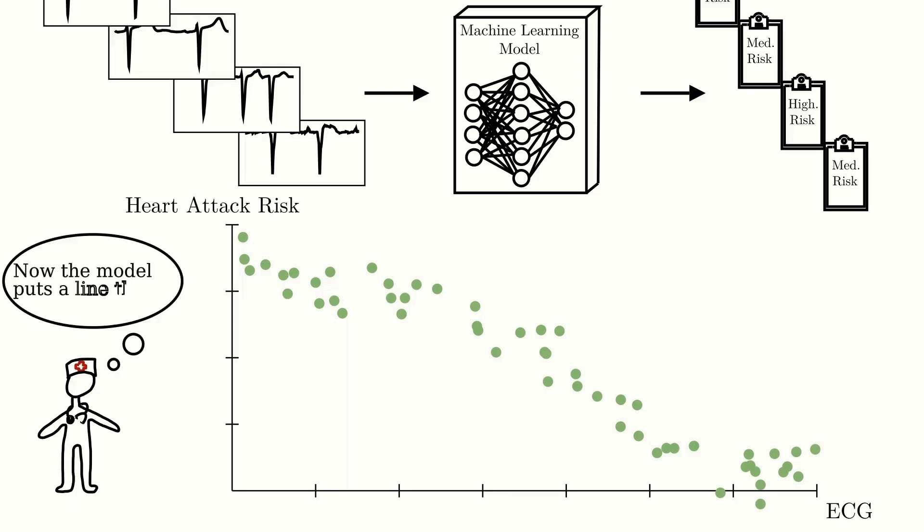Just like the data fit was quite bad for some straight lines in the ice cream example, some neural networks will also fit the ECG data quite poorly. But just like we could adjust the k and m values of the straight line to get a better data fit before, there is also a way to improve the data fit of the neural network.